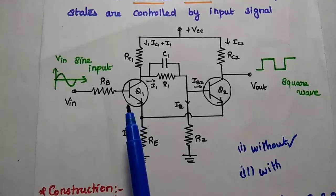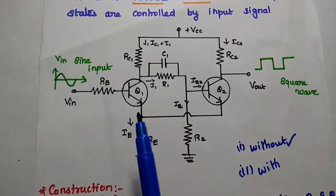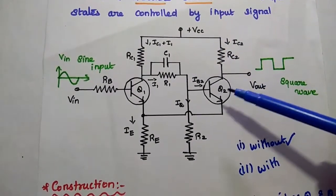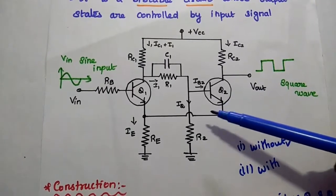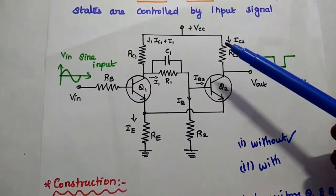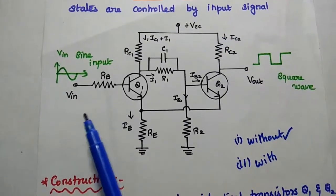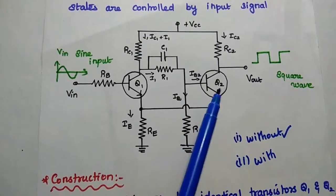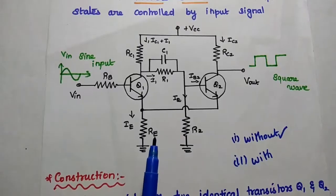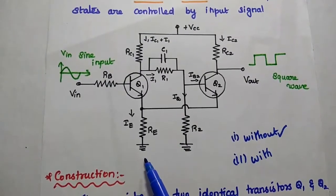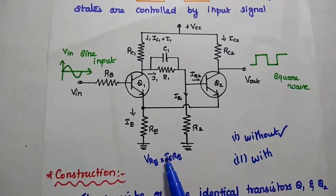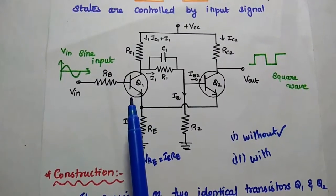Without any input signal to Q1, we simply provide the supply voltage VCC. At that time, Q2 starts conducting, which generates some voltage drop across the emitter resistor RE. So when the supply voltage is given without any input signal, Q2 starts conducting and the current of Q2 causes a voltage drop across the emitter resistance, expressed as IE × RE. This voltage provides a reverse bias to Q1.